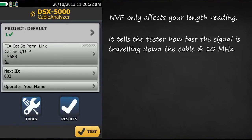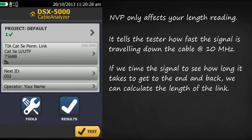The MVP value tells the tester how fast the signal is traveling down your cable at 10 MHz. If we time the signal to see how long it takes to get to the end of the cable and back, we can calculate the length of the cable.